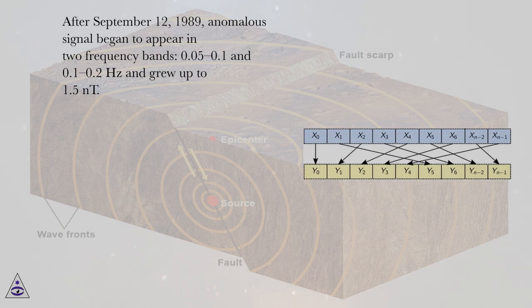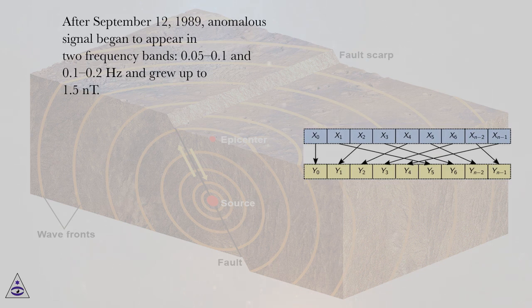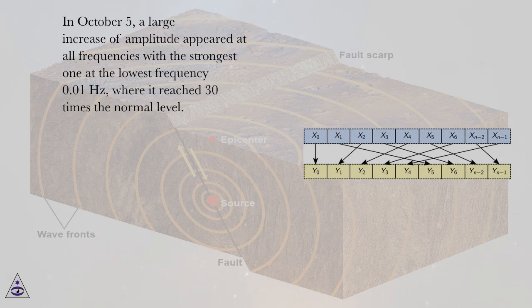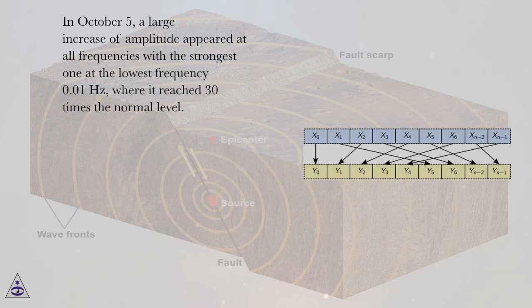After September 12, 1989, anomalous signal began to appear in two frequency bands, 0.05 to 0.1 and 0.1 to 0.2 Hz and grew up to 1.5 nT. In October 5, a large increase of amplitude appeared at all frequencies with the strongest one at the lowest frequency 0.01 Hz, where it reached 30 times the normal level.